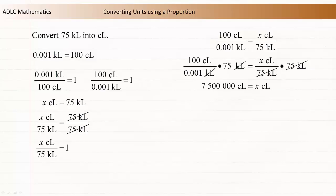Evaluating the left side of the equation gives 7,500,000, so x is equal to 7,500,000 centiliters.